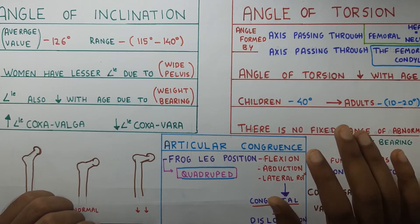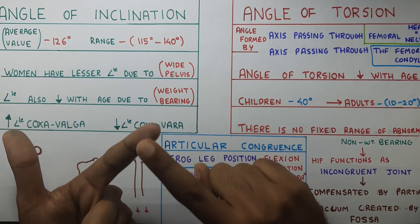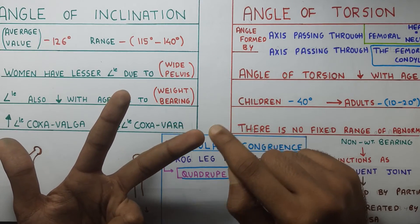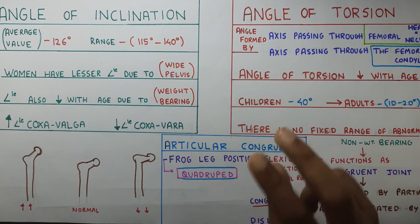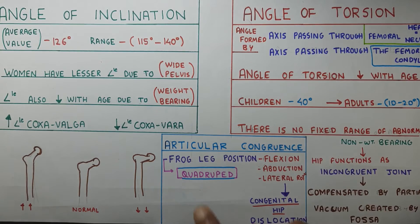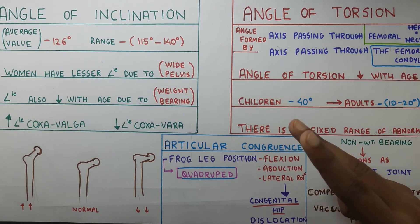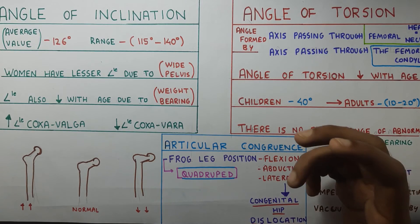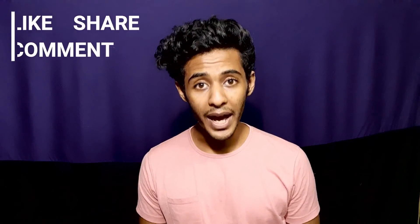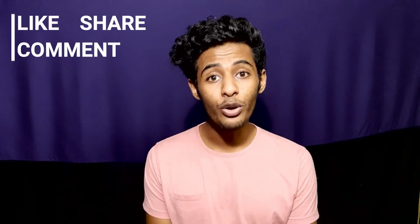To summarize: we talked about the distal articulation, the head, the fovea capitis attached to the acetabulum by the teres ligament where there is no articular surface. We covered two angles — inclination and torsion. And finally, we talked about articular congruence, where the frog leg position — flexion, abduction, lateral rotation — is used in congenital hip dislocations. Thank you for watching. Please share, like, comment, and subscribe to see you in the next video.